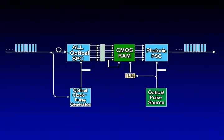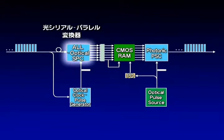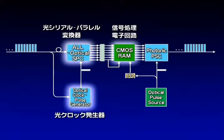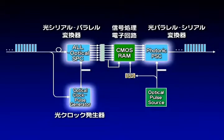Photonic RAM consists of an optical serial-to-parallel converter, an optical clock pulse generator, a signal processing electronic circuit, and a photonic parallel-to-serial converter.